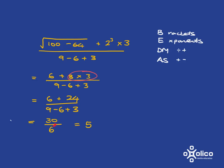And now, 30 over 6, well, 30 divided by 6 is 5. Remember, your fraction line just means division. So 30 divided by 6.